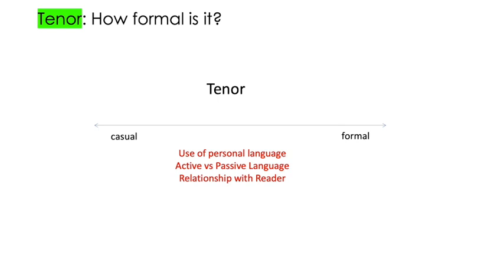If there were heaps of personal language — like every sentence had multiple cases of 'me', 'I', 'you', 'us', 'we' all over it — I would say it's really casual. If it had absolutely no personal language, I would say it's all the way to the formal side. This piece had three pieces of personal language, and they were pretty spread out, so I'm going to say it's more formal than it is casual. I probably could have put my dot further towards formal, but it's not about the exact point — it's about showing one way or the other, and that supports what you've analysed in the text.